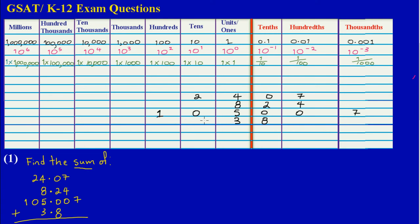Now that all numbers are placed in the correct columns in our place value chart, it's easy to add them up. When adding or subtracting we move from right to left. In the thousandths column I have only a 7, so I place 7 there. Moving to the hundredths column, I have 7, 4, and 0. Adding them: 7 plus 4 gives 11, and 11 plus 0 is still 11.